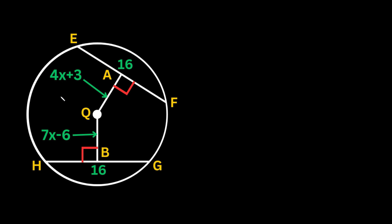The first thing we want to do is solve for x. Notice that we have two chords — one up here and one down here — and they're the exact same length. If two chords in the same circle are the same length, they are both the same distance from the center. So we can say 4x plus 3 is equal to 7x minus 6.